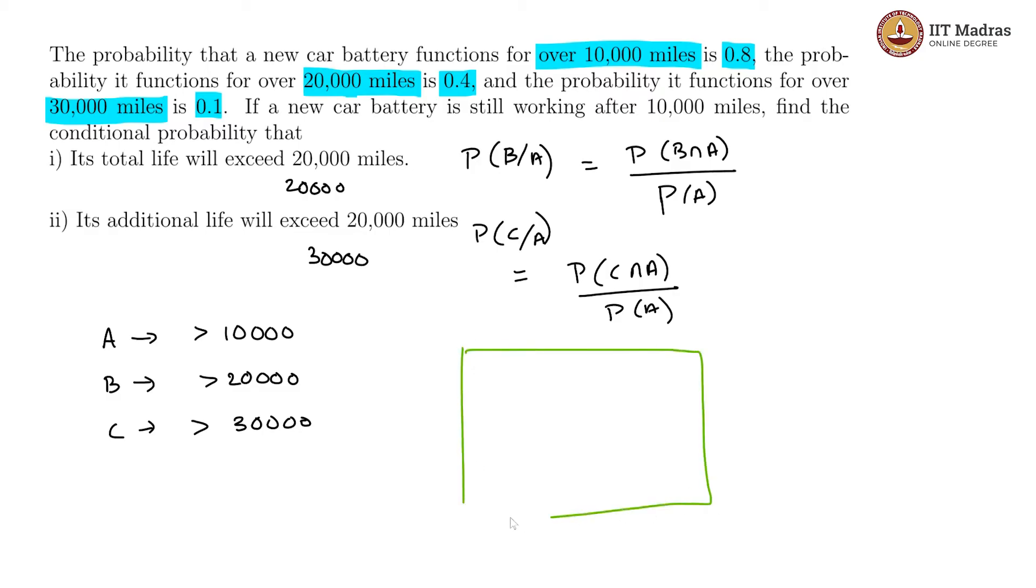Let this be the entire universe. If there is 80 percent probability of this happening, let us say this is A. B is a case which is entirely within this and it is only 40 percent of the total universe. B would be something like this.